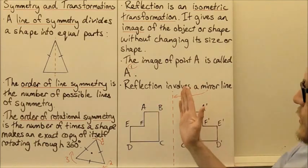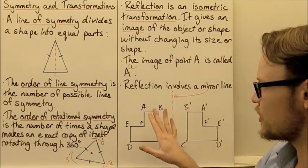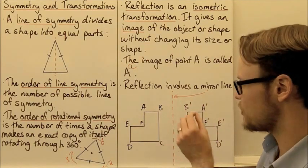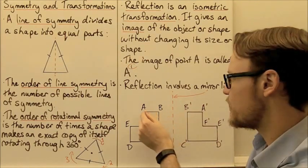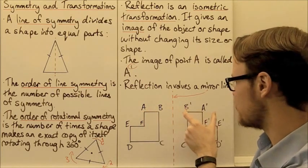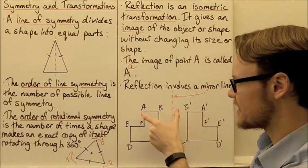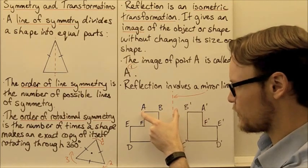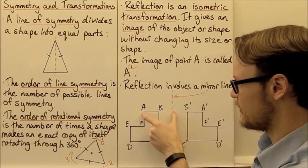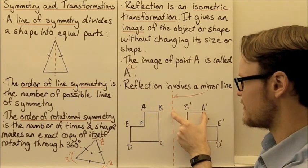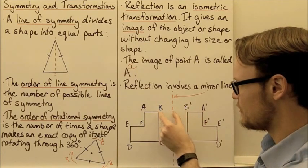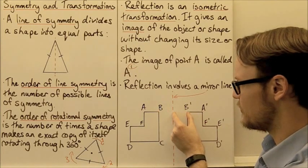If we were to hold up a mirror at the mirror line, the shape would be reflected exactly around it. Each point of the image is the exact same distance from the mirror line as the corresponding point of the object. The distance from A to the mirror line is exactly the same as the distance from A dash to the mirror line; the distance from B to the mirror line is the same as B dash.